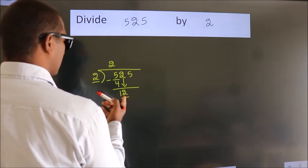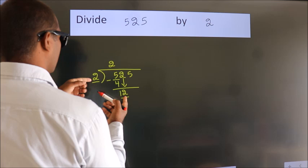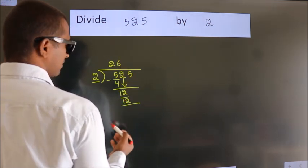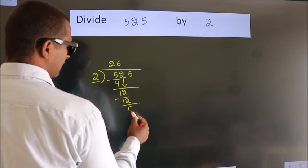When do we get 12? In 2 table, 2, 6, 12. Now, we subtract. We get 0.